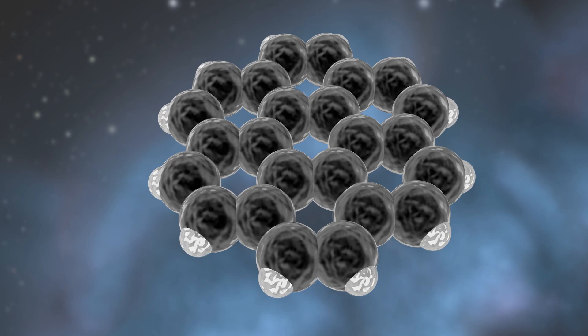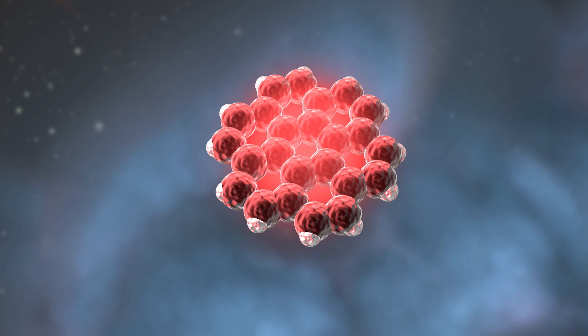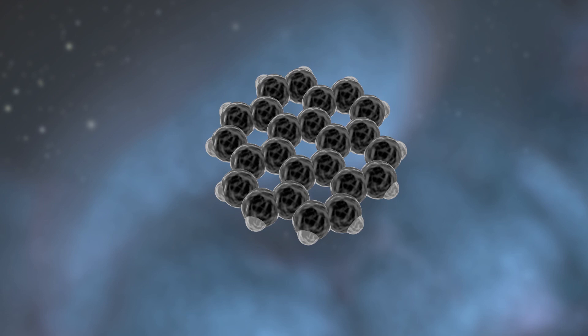When they absorb a photon, their little carbon skeleton vibrates in specific ways, and that vibration can then emit a photon. When they emit, it tends to be in the infrared. So it converts this energy into infrared photons.